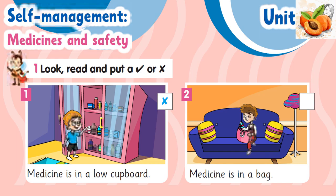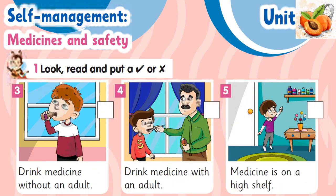6. I have a fever. Go to the doctor. Self-management, medicines and safety. 1. Look, read and put a tick or wrong. 1. Medicine is in a low cupboard. 2. Medicine is in a bag. 3. Drink medicine without an adult. 4. Drink medicine without an adult. 5. Medicine is on a high shelf.